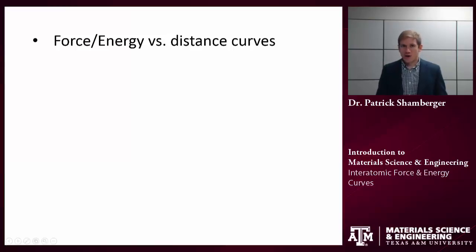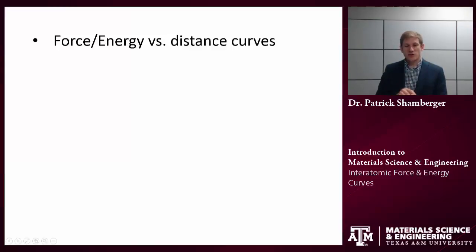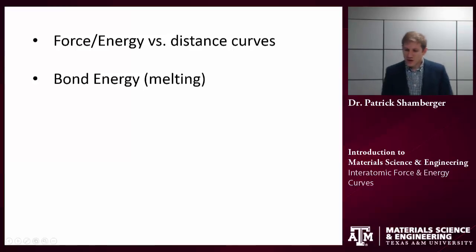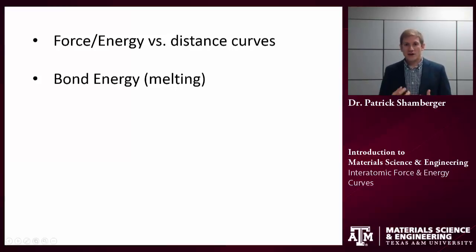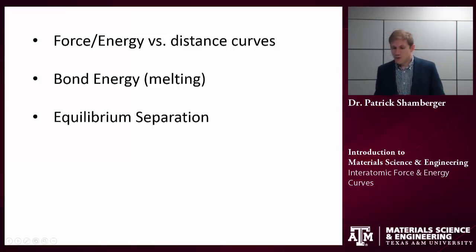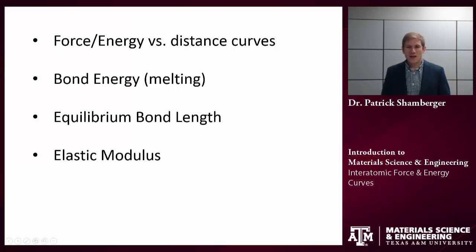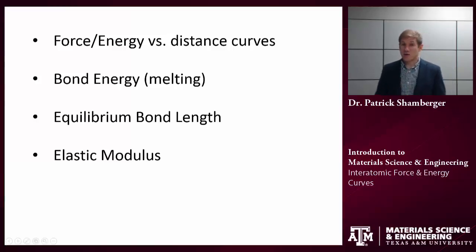So to recap: we talked about force and energy versus distance curves — remember not to mix the two up. In an energy curve, the equilibrium position is at the minimum. In a force curve, the equilibrium position at 0 Kelvin is at the force-equals-zero point. We talked about the significance of the depth of the interatomic potential, which is the bond energy — and if we give the system enough kinetic energy to overcome that cohesive energy, we melt the material. We talked about the equilibrium separation R₀, where at 0 Kelvin the atoms sit to minimize potential energy. And finally, we talked about how the elastic modulus is related back to the slope of the force versus distance curve at the equilibrium position.